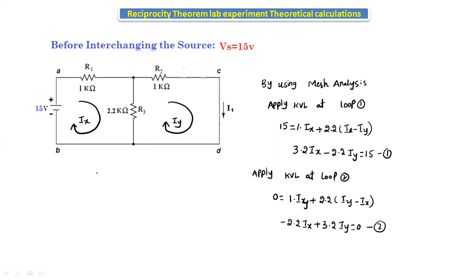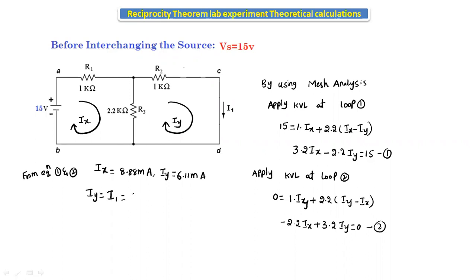Solving equations 1 and 2, we get ix equal to 8.88 milliamps and iy equal to 6.11 milliamps. The current passing through this branch is iy, so iy equals i1 equals 6.11 milliamps. Therefore, before interchanging the source at 15 volts, the response in this branch is 6.11 milliamps.